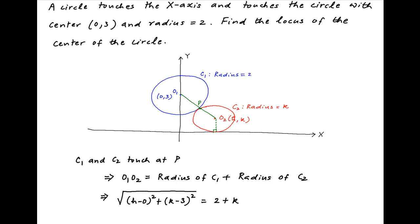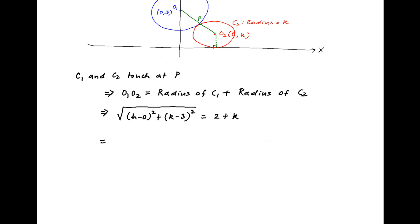On the right-hand side, the radius of C1 is 2 and the radius of C2 is k. Taking the square of both sides, we get h² + (k-3)² = (k+2)².